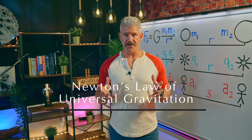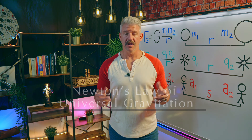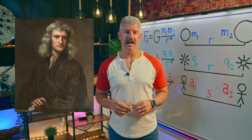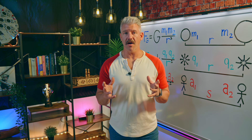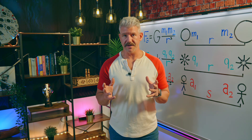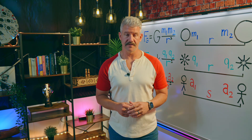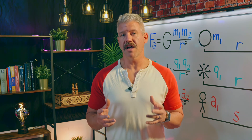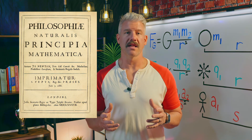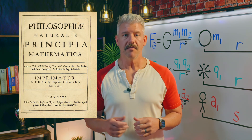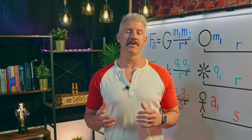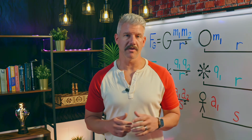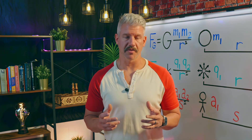Newton's Law of Universal Gravitation describes the force of attraction between two objects with mass. Formulated by Sir Isaac Newton in the 17th century, this law was a groundbreaking discovery in the field of physics. The law was published in 1687 in Philosophia Naturalis Principia Mathematica, Mathematical Principles of Natural Philosophy, more commonly known as the Principia.